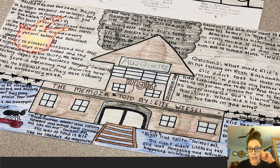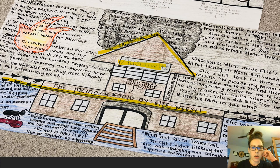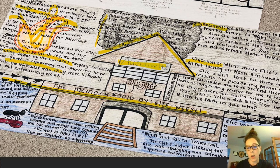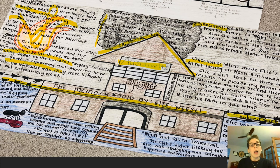One more example — this one looks like they did the setting, because there's a house at Auschwitz, which was a Nazi concentration camp. I like how they used images as a backdrop and wrote over them — that's another option to consider. Notice that everything is labeled: question one, question two, barbed wire is labeled. Make sure you label all your elements to get credit for your work. I hope this was helpful — email me with any questions!